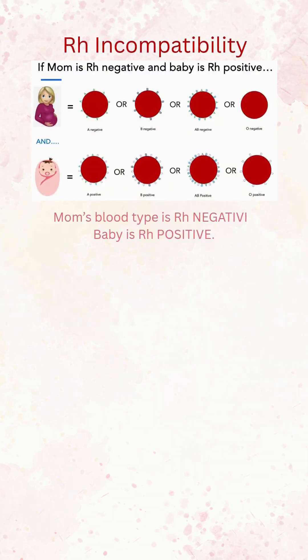RH incompatibility happens when mom's blood type is RH negative and the baby's blood type is RH positive. The mom could have A negative, B negative, AB negative, or O negative blood type, and the baby's blood type could be anything positive.